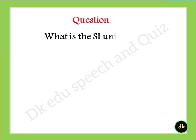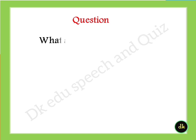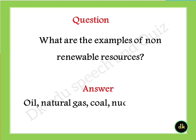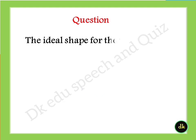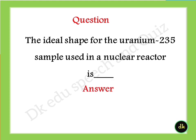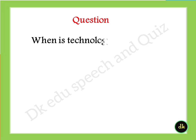What is the SI unit of work? Answer: Joule. What are the examples of non-renewable resources? Answer: oil, natural gas, coal, and nuclear energy. The ideal shape for the uranium-235 sample used in a nuclear reactor is? Answer: a sheet.